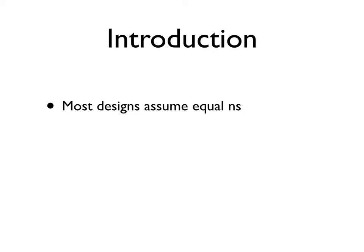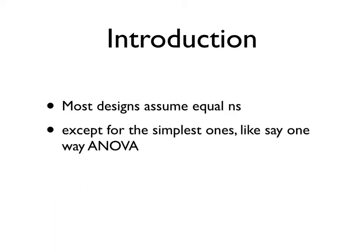Most designs assume equal n's. Have you noticed that we've always, I've always been writing little n minus 1. I've been saying little n in this cell, little n in this cell. So most designs assume equal n's. Except for the simple ones. One way ANOVA, similar means it doesn't actually need equal n's. There are ways that it can be dealt with.